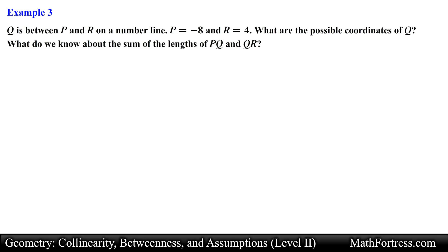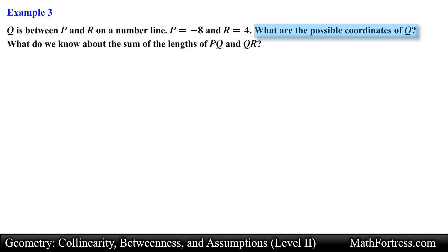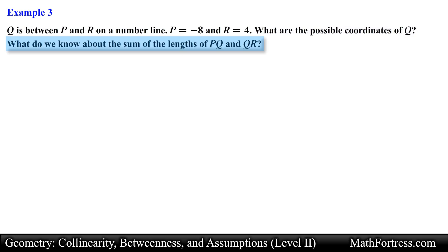Point Q is between point P and point R on a number line. The coordinate of point P is negative 8 and the coordinate of point R is positive 4. What are the possible coordinates of point Q? What do we know about the sum of the lengths of segment PQ and segment QR? In this problem we are given the coordinates of two distinct points. We also know that point Q is between point P and point R. We are asked to determine the possible coordinates of point Q and the sum of the lengths of segment PQ and segment QR.